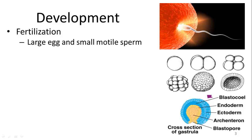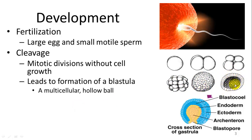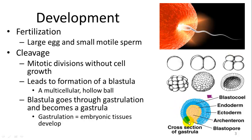Animals also have a specific development. Generally, fertilization occurs between a larger egg and a smaller, motile sperm with a flagellum. After fertilization, the zygote goes through many rounds of cleavage where mitosis occurs, but the resulting cells do not grow — they just divide and get smaller and smaller — eventually forming a blastula, which is like a hollow ball the same size as the original zygote.